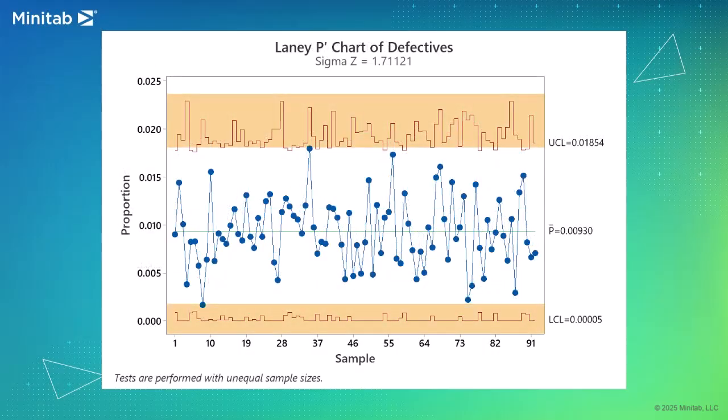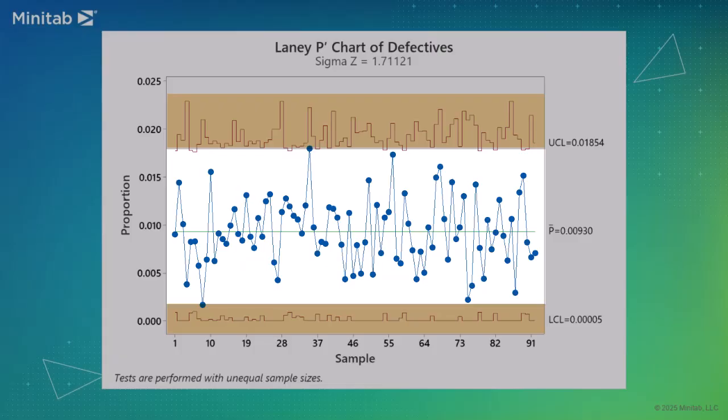The Laney P-Prime chart, however, corrects for overdispersion and shows that the process is actually in control.